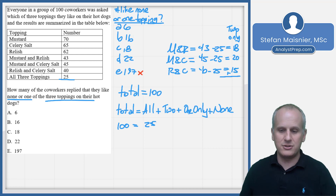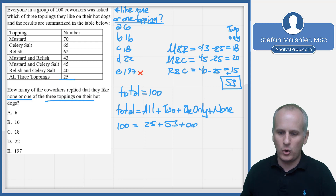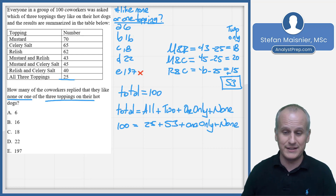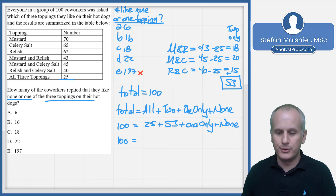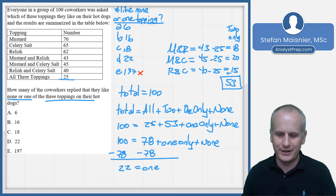Our two-onlys is going to be the sum of those three two-group combinations: 20 plus 15 is 35, 35 plus 10 is 45, 45 plus 8 is 53 that are two-only. So we've got 25 plus 53 plus the one-only plus the nones. I'm not solving for them individually — I want to solve for exactly none or one combined. So 100 equals 25 plus 53 is 78, plus one-only plus nones. Subtracting 78 from each side, we discover that 22 equals one-only or none. The correct answer is choice D.